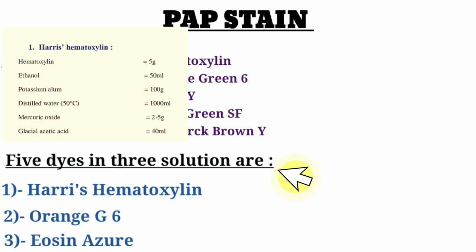Five dyes in three solutions. First solution: Harris hematoxylin. To prepare Harris hematoxylin we need: hematoxylin 5g, ethanol 50ml, potassium alum 100g, distilled water 1000ml, mercury oxide 2.25g, and glacial acetic acid 40ml.